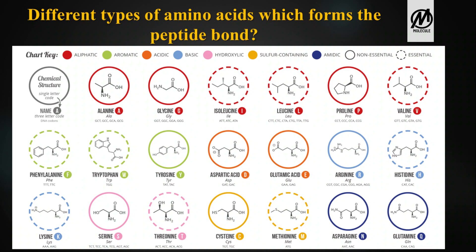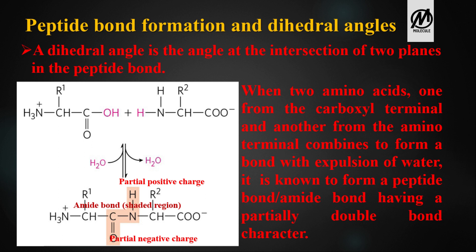What is peptide bond formation and what are dihedral angles? A dihedral angle is the angle at the intersection of two planes in the peptide bond. When two amino acids — one from the carboxyl terminal and one from the amino terminal — combine with the loss of water, they form a peptide bond, also called an amide bond. This bond has a partially double bond character due to a partial negative charge on the oxygen and a partial positive charge on the hydrogen, caused by the electronegativity of the nitrogen atom.